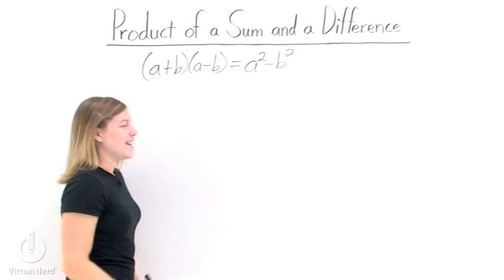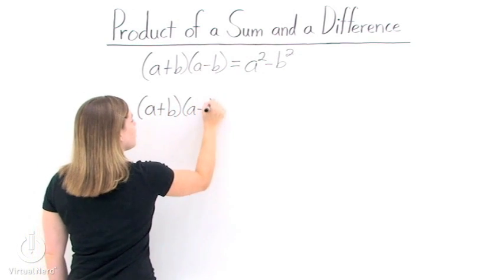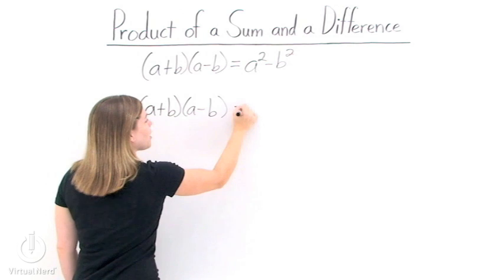Well, let's find it. Let's take our left-hand side, a plus b times a minus b, and FOIL it together to see what we get.